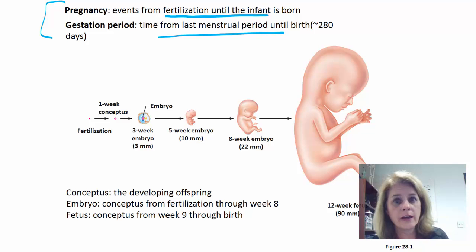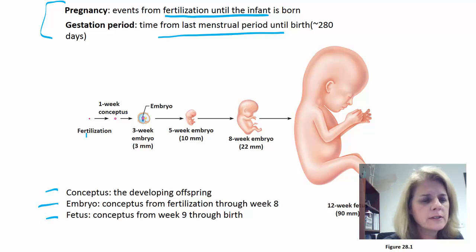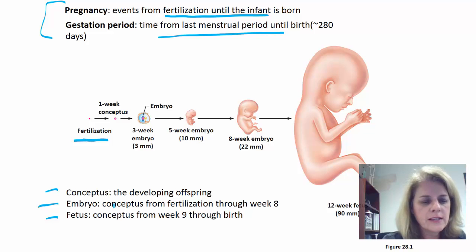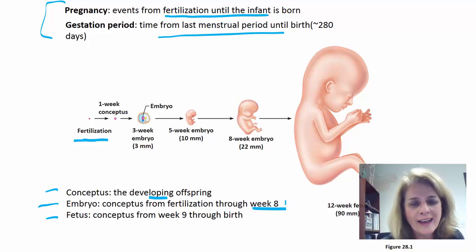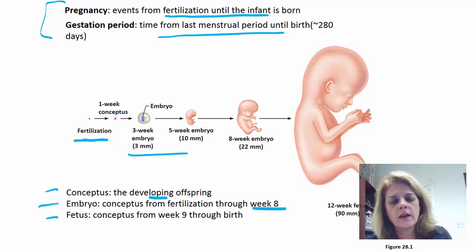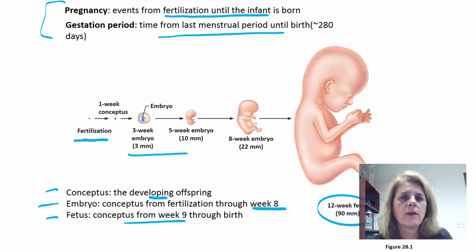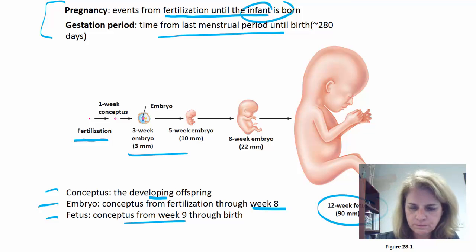Some other important terms: conceptus, embryo, and fetus. The conceptus is just the developing offspring — once fertilization occurs, we have a conceptus. The embryo is the conceptus from fertilization through week eight. From week nine through birth, we call it a fetus. Once it's born, we use the word infant.